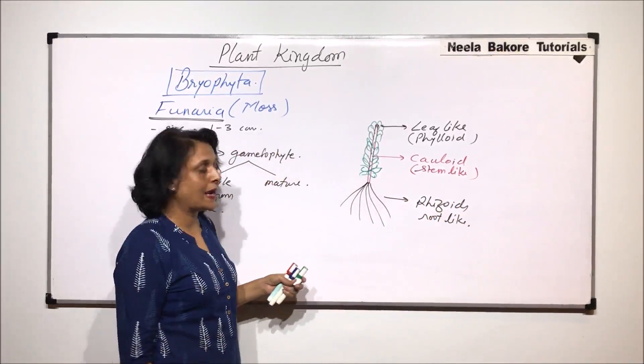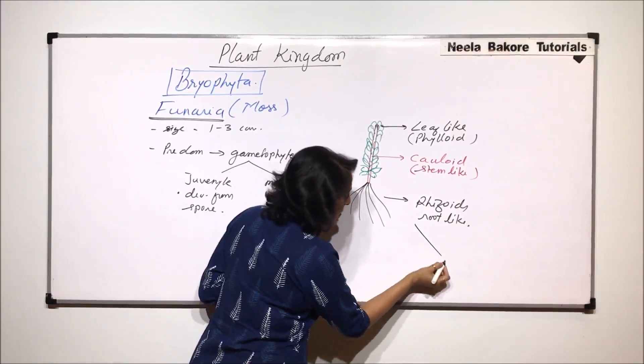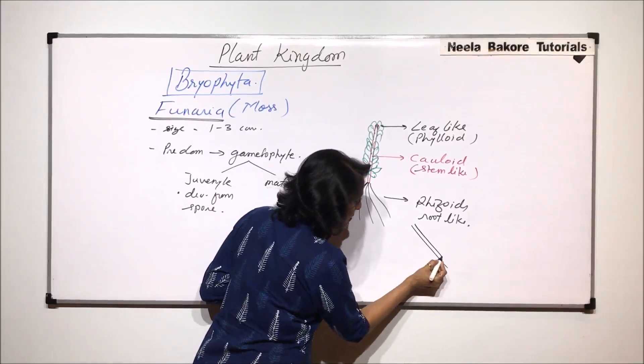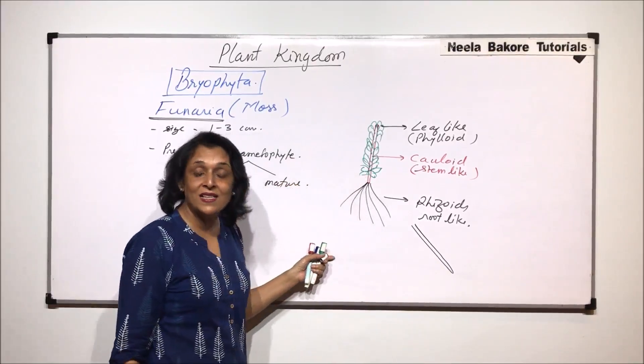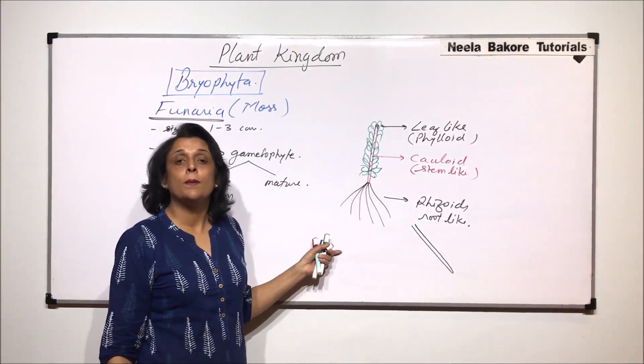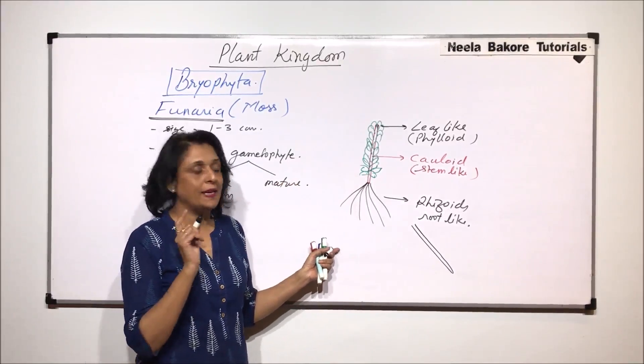I am going to enlarge one rhizoid. It is a multicellular structure that means it is made up of multiple cells and the septa between the cells are oblique.